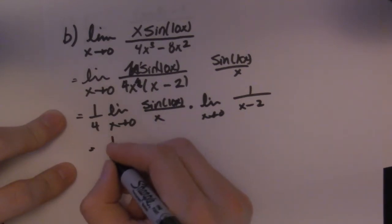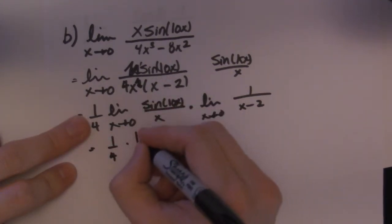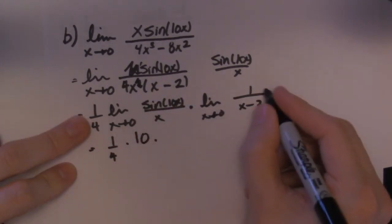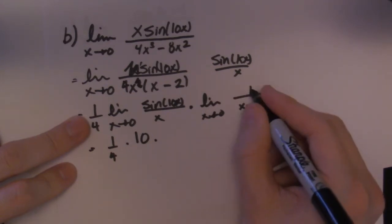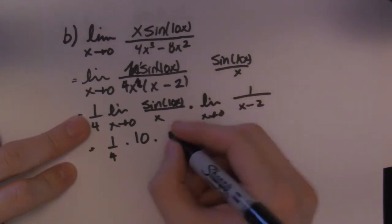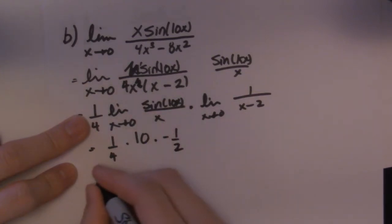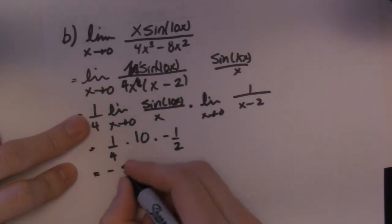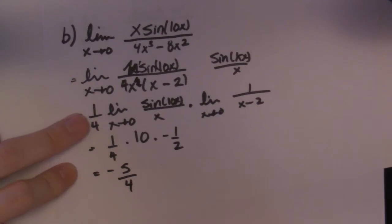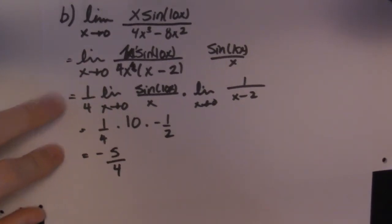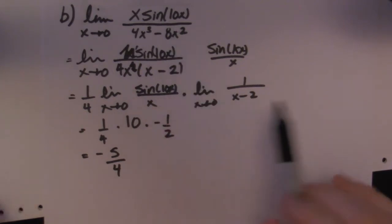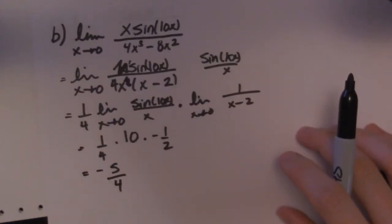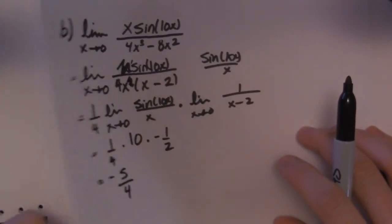So I get left with 1 over 4. The limit of this guy is 10. And then the limit of this guy I just sub in 0. So 1 divided by 0 minus 2 is negative 1 over 2. So that's negative 5 over 4. And there it is. There's my limit. Alright. So there's another example of when you have a polynomial combined with a trig function. Alright, let's go ahead and try the last one.